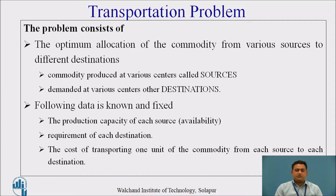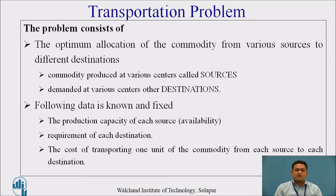Here, we will see what is the transportation problem. The problem consists of the optimal allocation of the commodity from various sources to different destinations. The source is where the commodity or the product is produced.